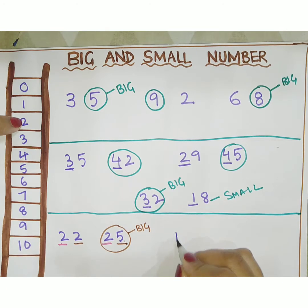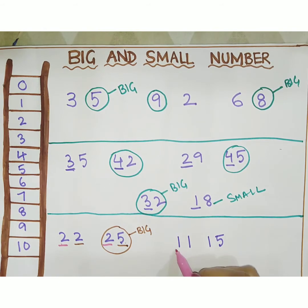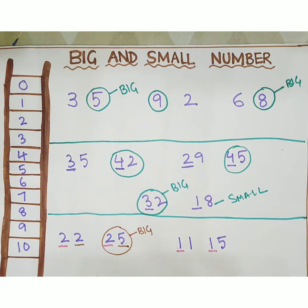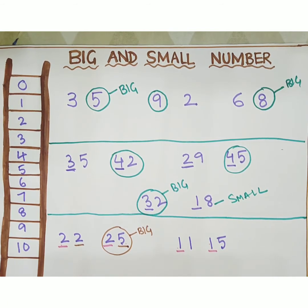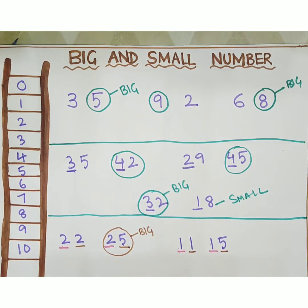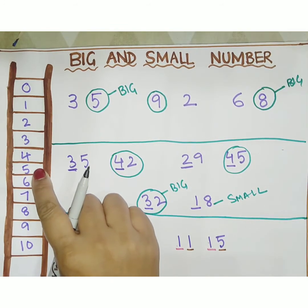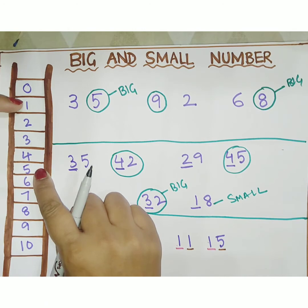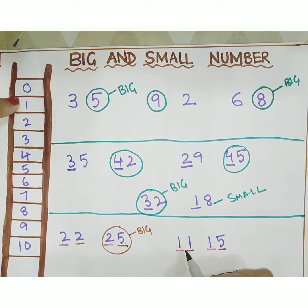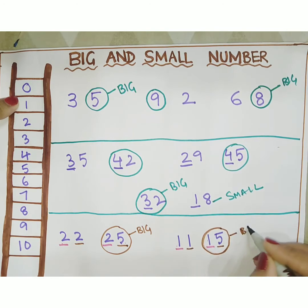If the numbers are 11 and 15, we have to compare the first digit. The first digits are the same, so we have to see the second digit. If the first digit is the same, compare the second digit. The second digits are 1 and 5. Which number comes first? 1 comes first and 5 comes later. It means 11 is the small number and 15 is the big number.